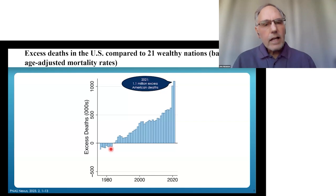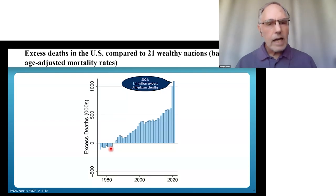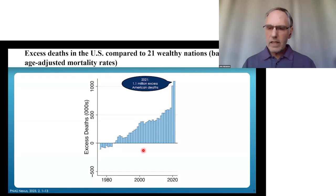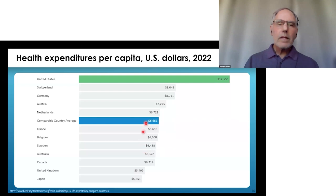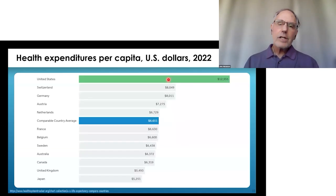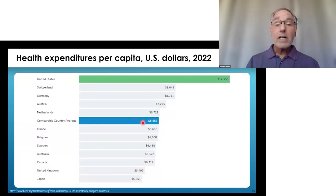This should be front-page news. The 9/11 disaster changed the course of American history, and yet this is going on without getting any press coverage at all. It's hard to get this into mainstream media — only alternative media seems willing to cover it. Meanwhile, 1.1 million Americans in excess are dying each year, and we are paying $12,500 per person per year while citizens of comparable countries are spending half that much.